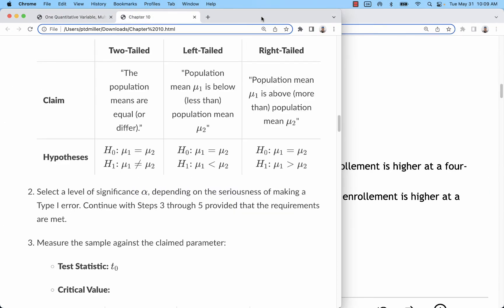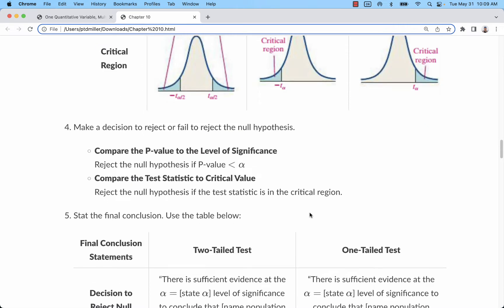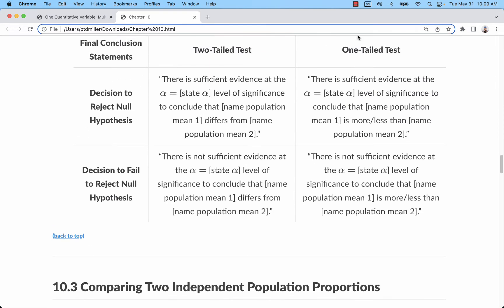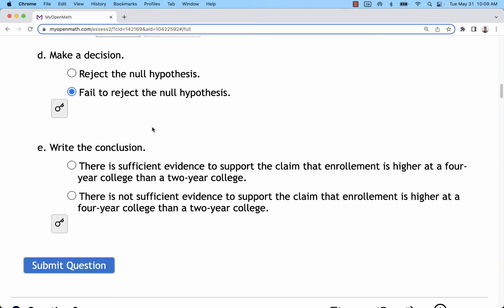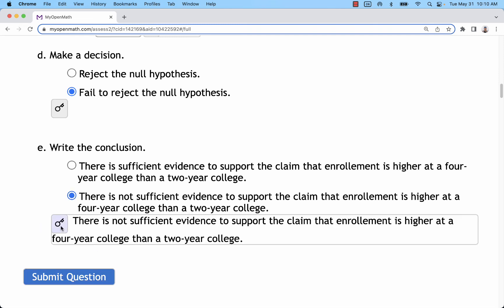And to interpret that, going back to the notes, we have a one-tailed test, we're going to fail to reject. So we're looking at a conclusion something like this. The sample does not provide sufficient evidence, or there is not sufficient evidence to conclude that the first mean is more than the second mean. So there is not sufficient evidence to support the claim that it's higher at the four-year than the two-year. That's going to be our final answer for that one.